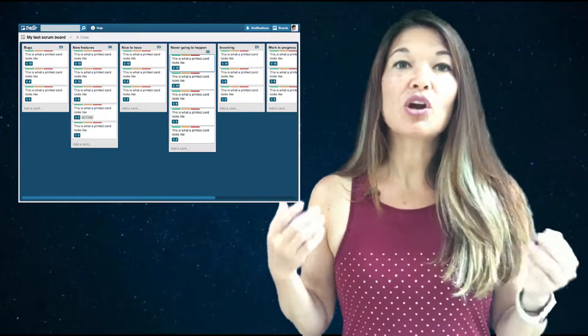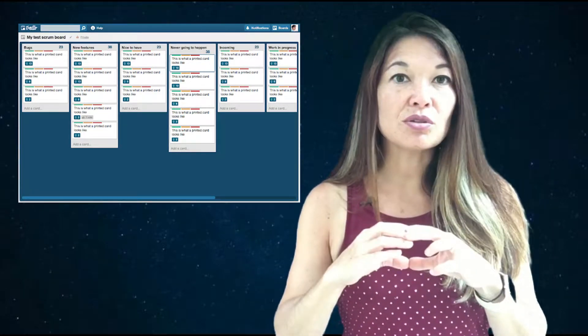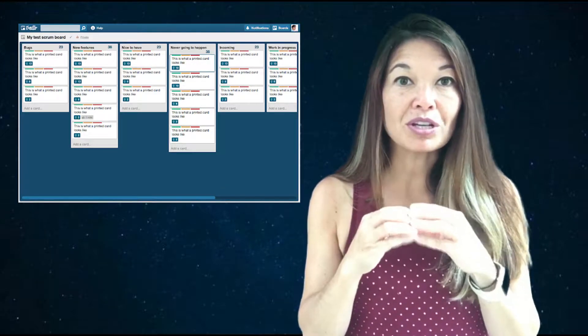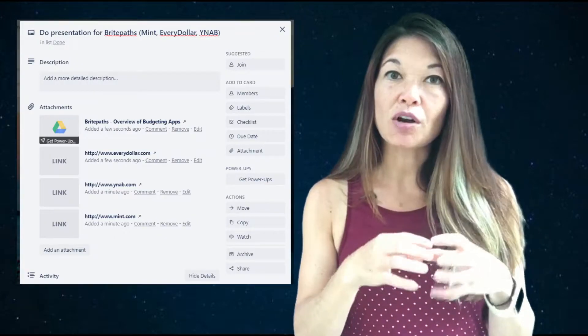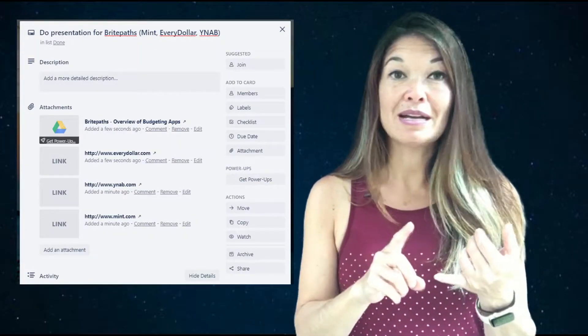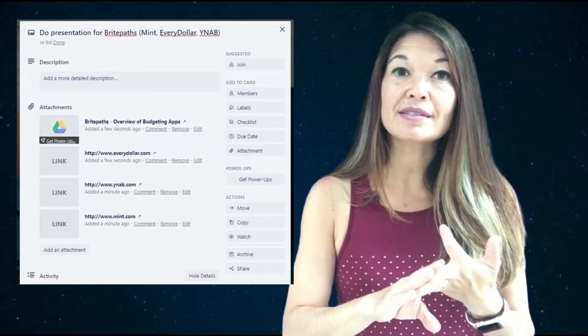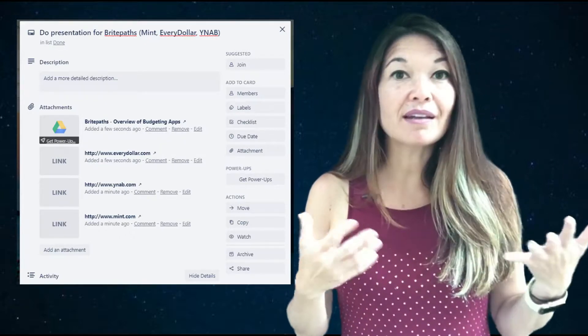What's nice about Trello is that the cards aren't just these two-dimensional sticky notes that can only hold a small bit of information. Instead, you can pack each card full of information like attachments, due dates, checklists, images, links, and other notes. So this makes Trello really versatile and you can use it in a host of different ways.